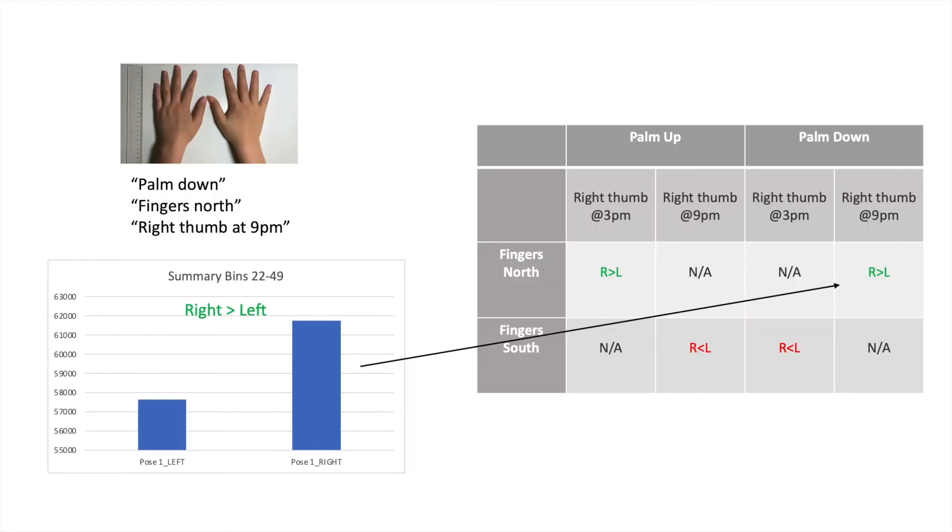In the picture at the upper left, the palms are facing down, the fingers are facing up, which we call north, and the right thumb is at the 9pm location, as shown by the bar graph. This tells us that sharing the same palm and finger parameters will also exhibit that this index is being larger for the right side compared to the left side.